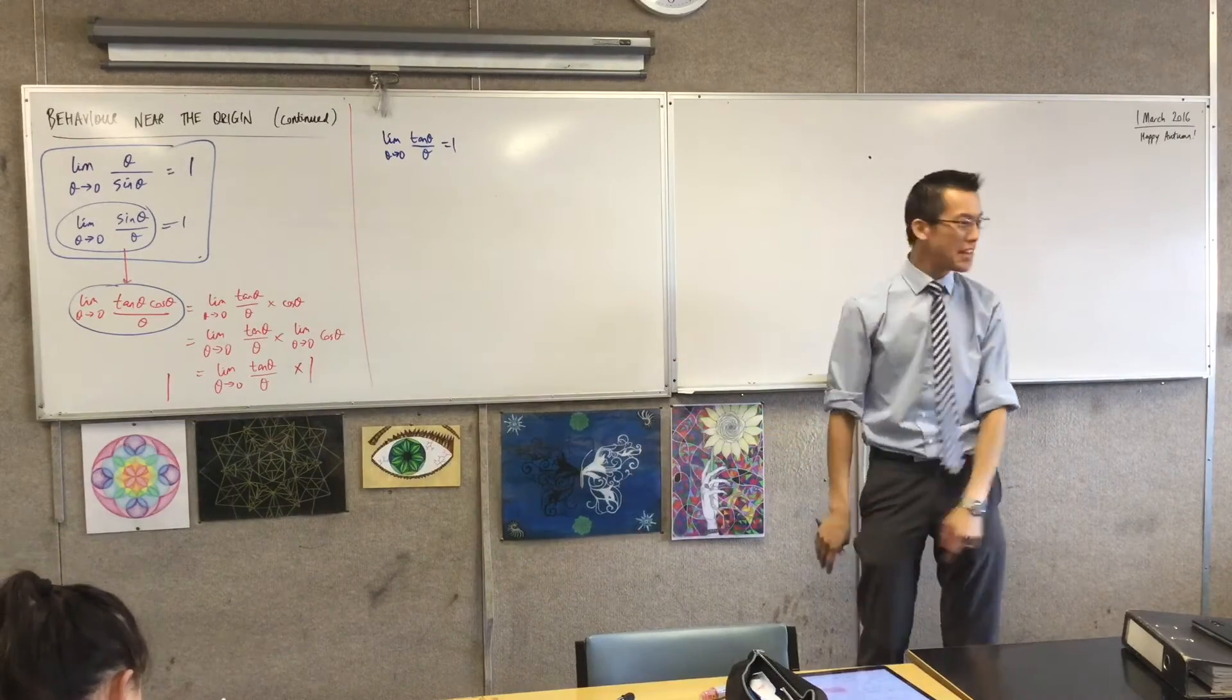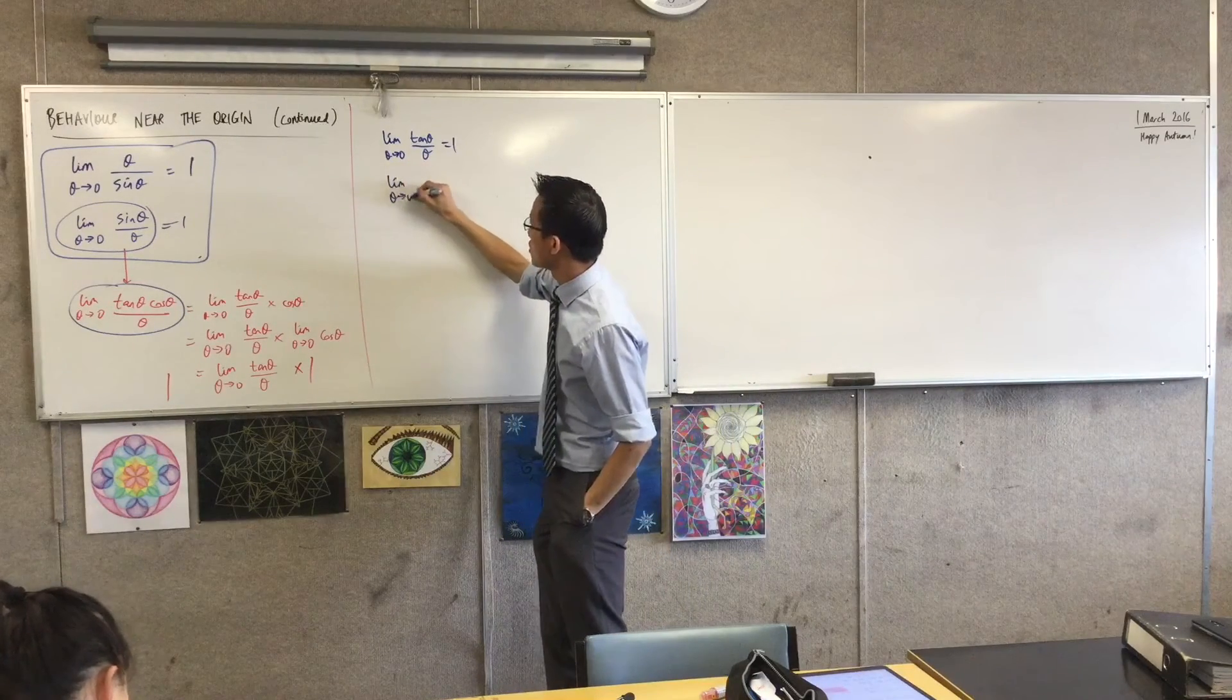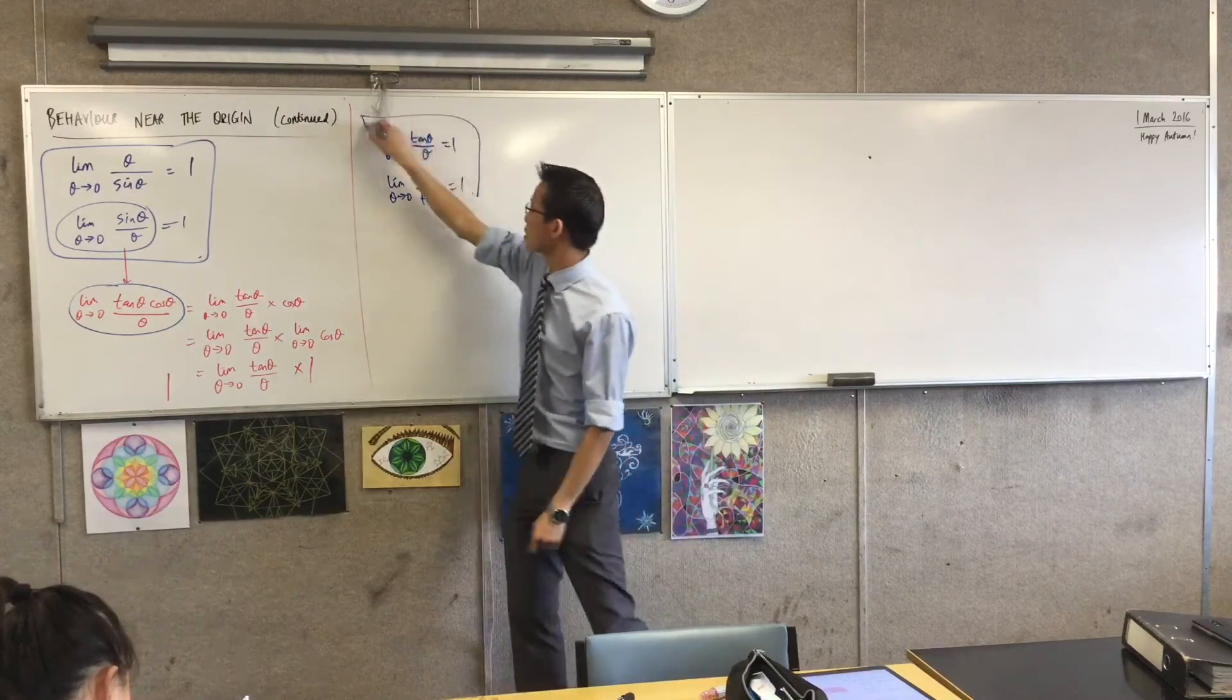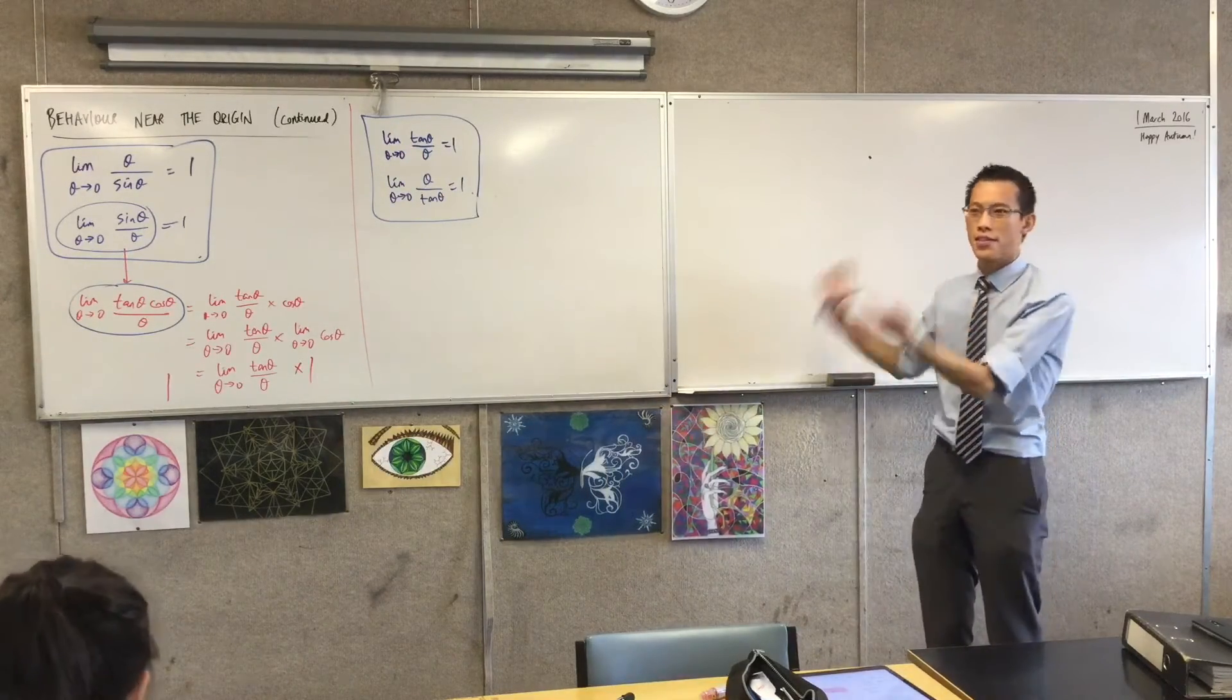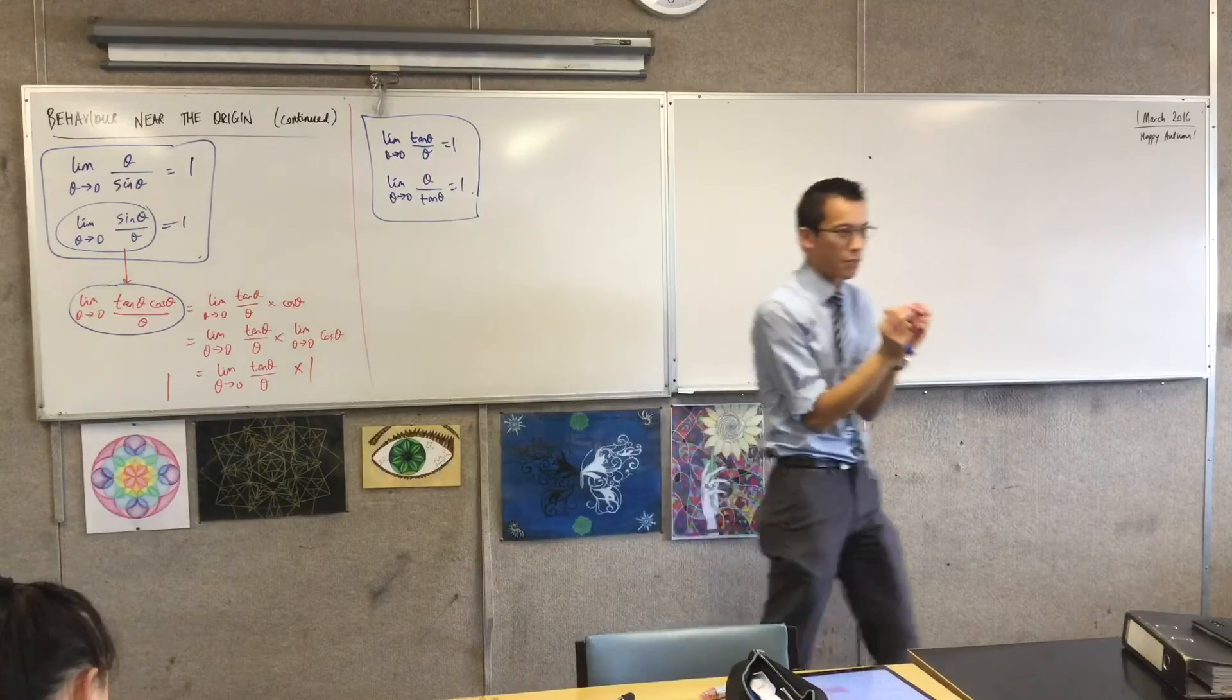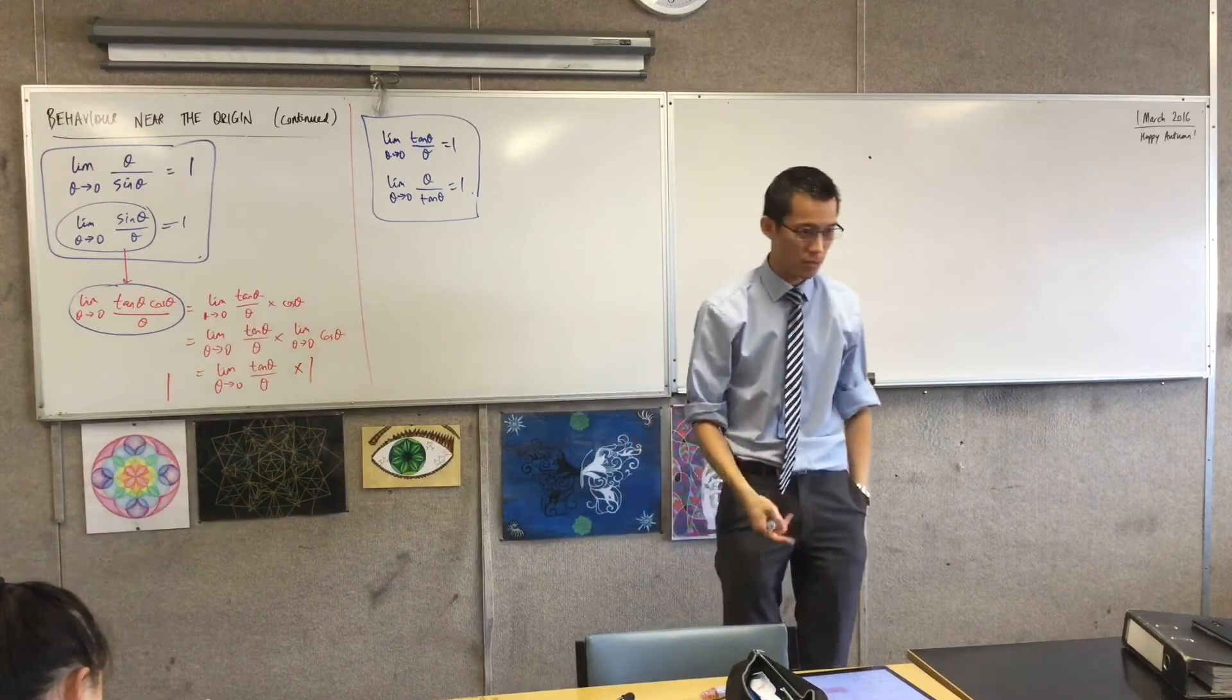So now I've got this, I can turn it upside down just in the same way that I did here. So the limit as theta approaches 0 of the reciprocal also equal to 1. Let's put a big box around it. Excellent. Now this is very theoretical. What you're doing is you're comparing these things together and you're saying look when theta is really tiny, when you're getting close to the origin, these things are going to get closer and closer to each other.